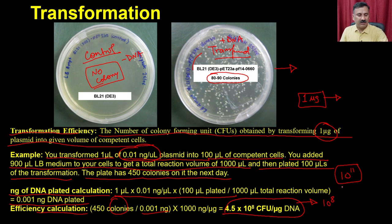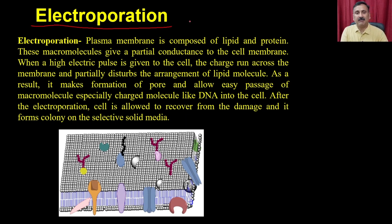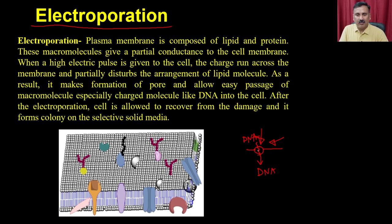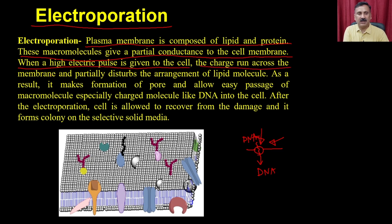Apart from the chemical transformation method, you can also use electroporation. Electroporation uses electrical pulses applied to the cells — this creates holes in the plasma membrane, allowing DNA that is already present outside to enter the cell. The plasma membrane is composed of lipid and protein, and these macromolecules give partial conductance. When a high electrical pulse is applied, the charge runs across the membrane and partially disturbs the arrangement of lipid molecules, forming pores that allow passage of charged molecules like DNA into the cell.